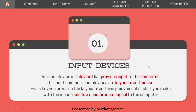An input device is a device that provides input to the computer. The most common input devices are keyboard and mouse. Every key you press on the keyboard and every movement or click you make with the mouse sends a specific input signal to the computer. For example, clicking the enter button or moving the cursor sends a specific input signal.